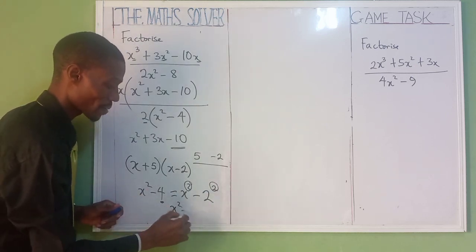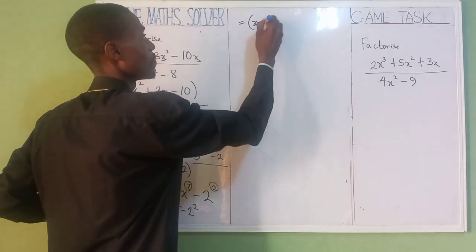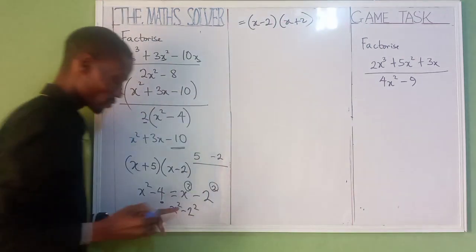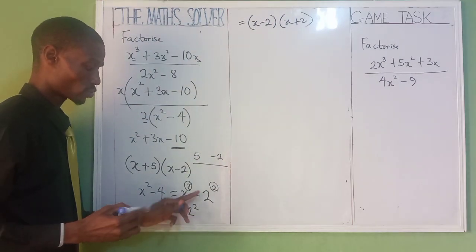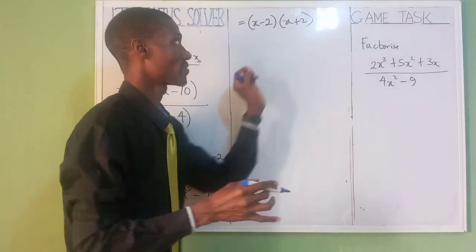We now have x² - 2², which is now going to be (x - 2)(x + 2). That's the rule. Anytime you have x² - a², difference of two squares, one negative, one positive.